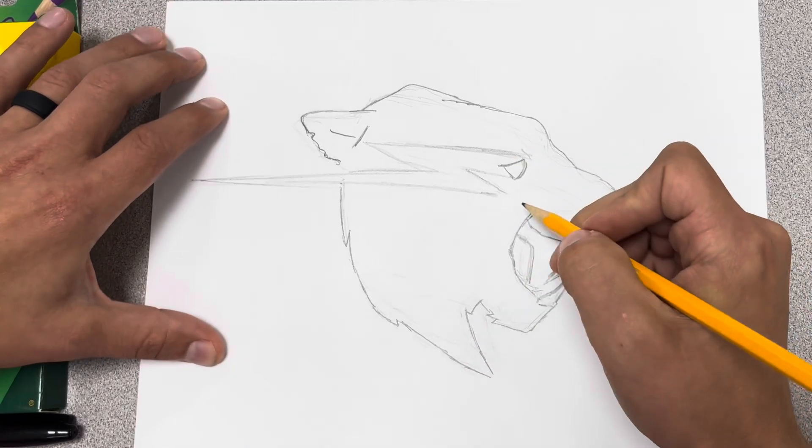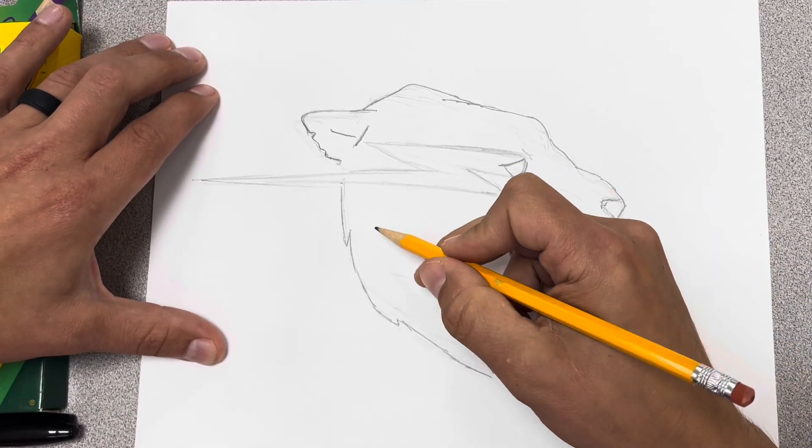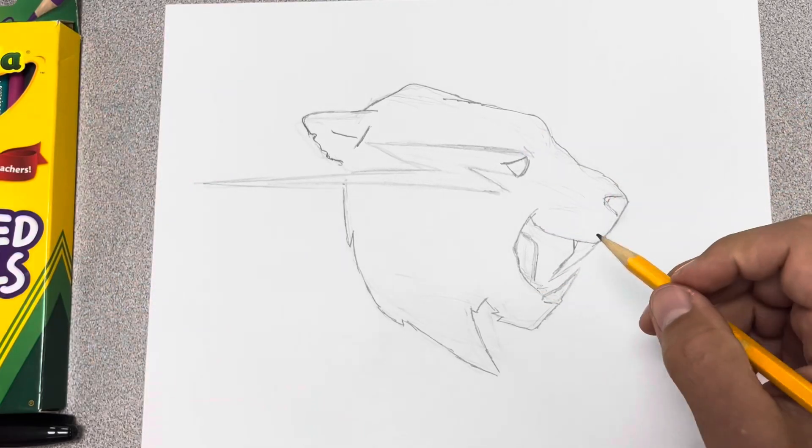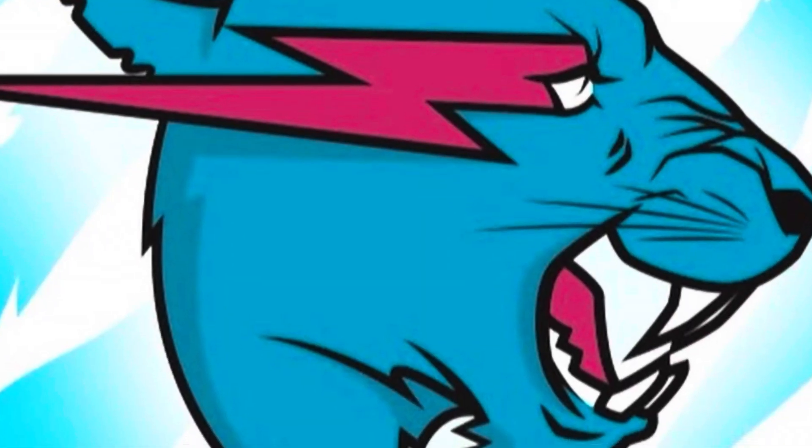So I'm gonna go over this in Sharpie, add some of those little extra little hints, and then start thinking about how I'm gonna color and get that Beast logo blue and pink and what tools for that. So let's go through it with Sharpie real quick.